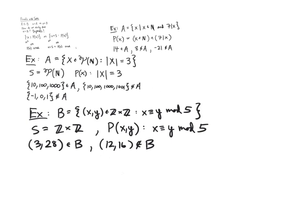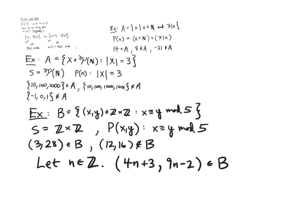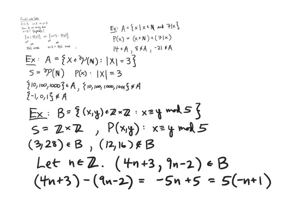A slightly more sophisticated example: we can show that for any integer n, the pair (4n+3, 9n−2) is in B. This follows because (4n+3) − (9n−2) = −5n + 5 = 5(−n + 1), so this difference is divisible by 5. Thus the pair of integers is congruent mod 5, and so the pair is in B.